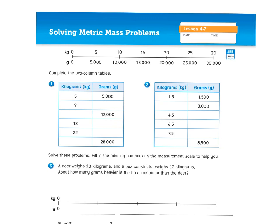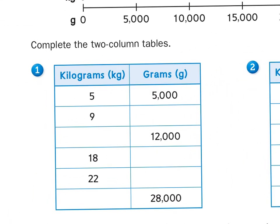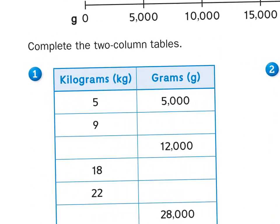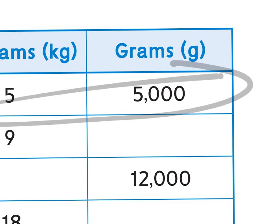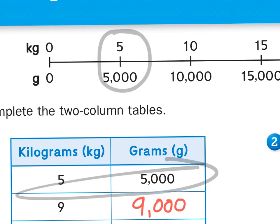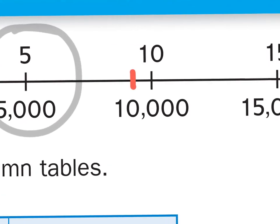When we look at the table right here, it shows us that 5,000 grams is equivalent to 5 kilograms. We see it here, and we see it up here. So if I wanted to convert 9 kilograms into grams, all I would do is take that number, 9, and then just add three zeros.